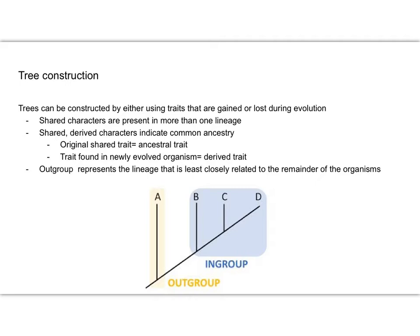Like for instance, the wolf to whale phylogenetic tree. Shared characters are present—they have to be present in more than one lineage, and that's what would obviously make it a shared character.